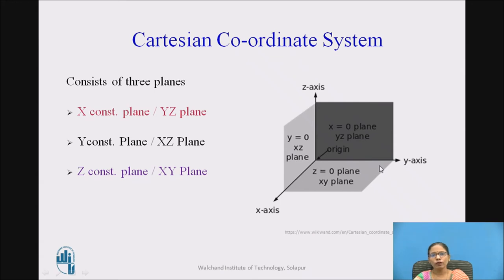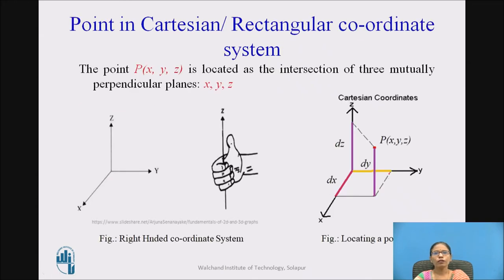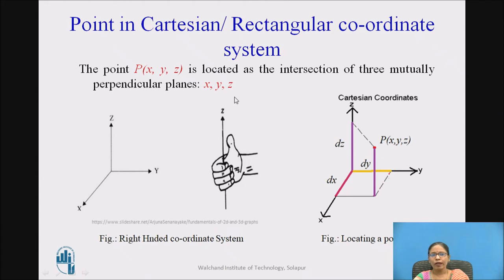Similarly, for the z equals 0 plane, as z is constant, the other two — x and y — are varying, so it is called the xy plane. A point in the Cartesian coordinate system, point P(x, y, z), is located as the intersection of three mutually perpendicular planes x, y, and z.